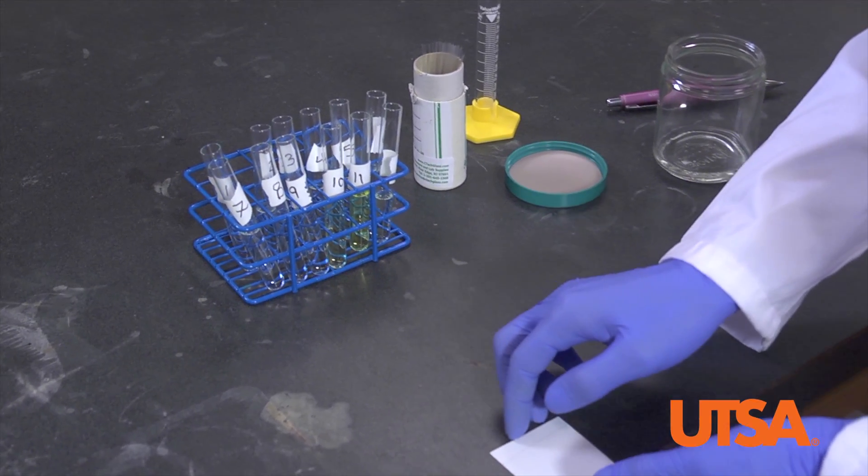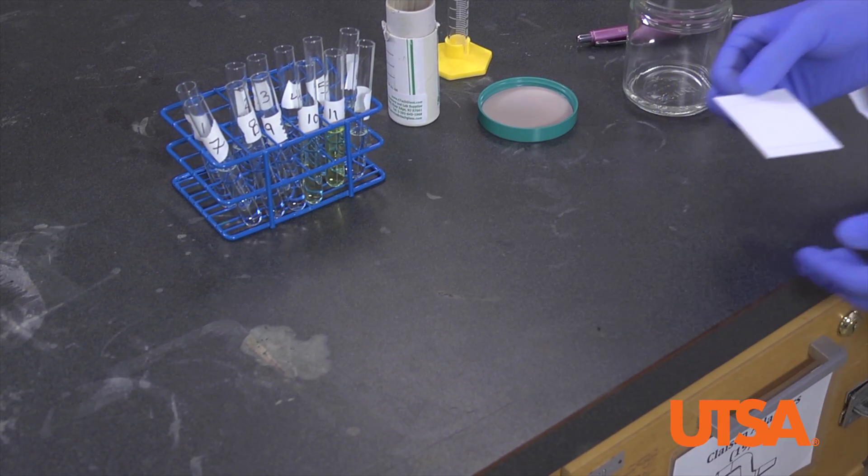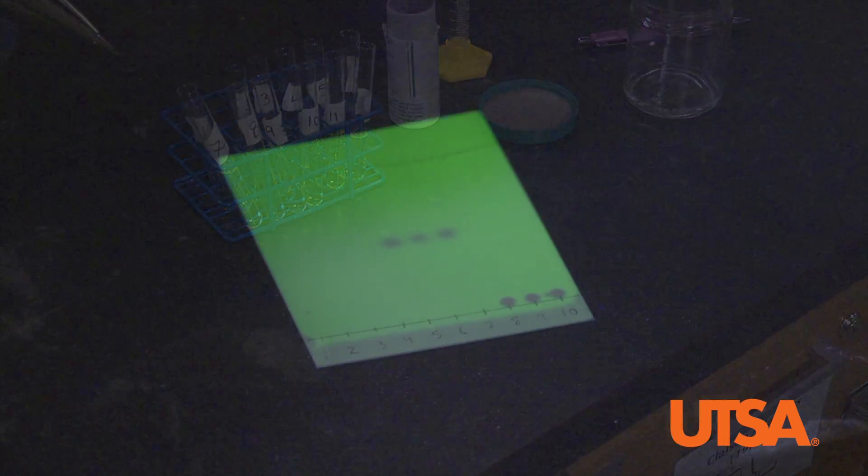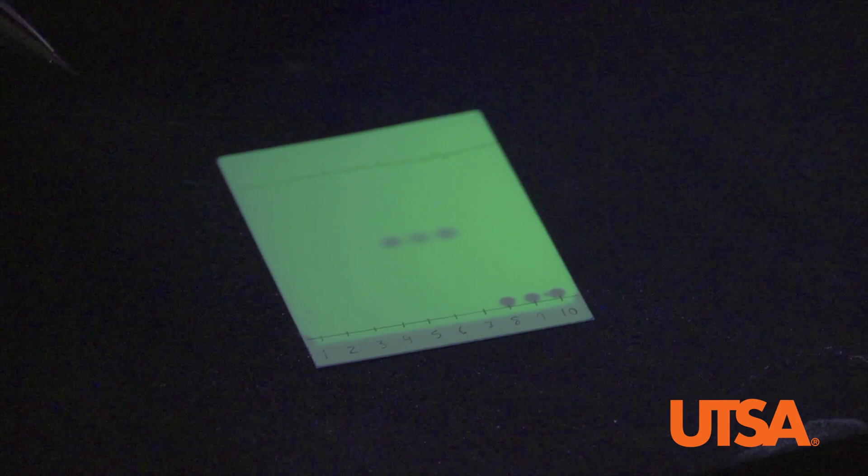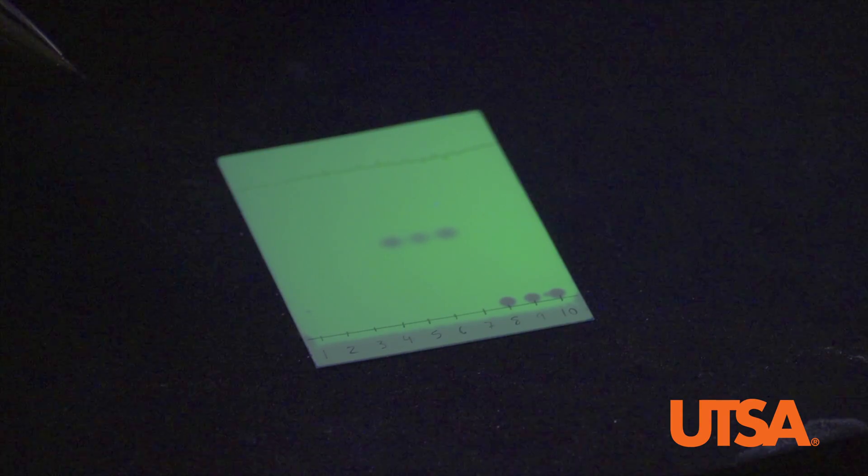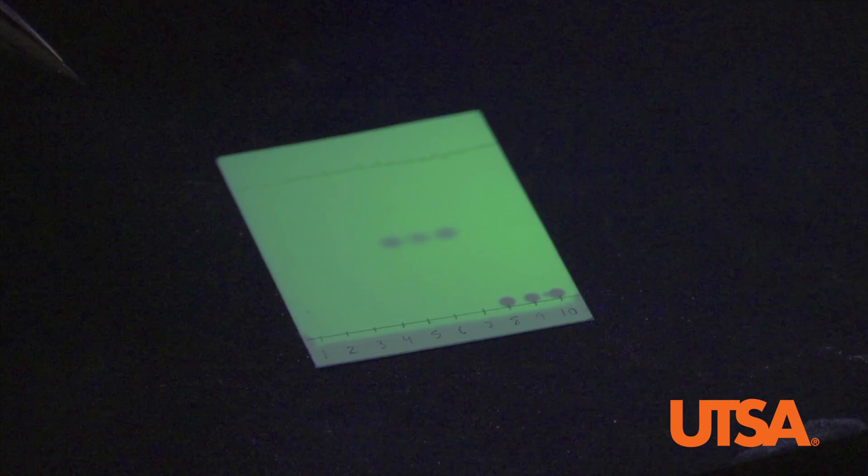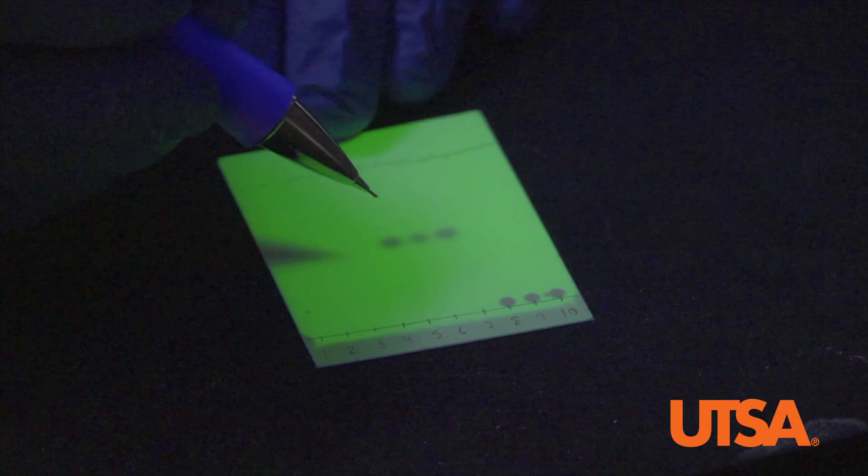Take the plate to the UV light. Under the UV light, use your pencil to circle the spots to visualize how far up the TLC plate they traveled. Circle each spot.